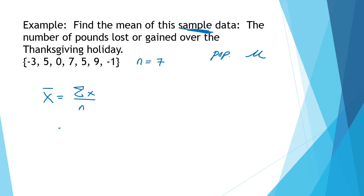So we'll take negative three plus five plus zero plus seven plus five plus nine minus one, and divide that by seven.